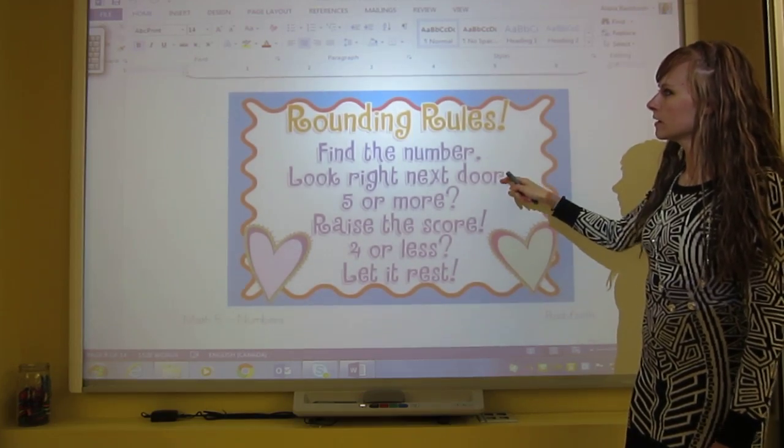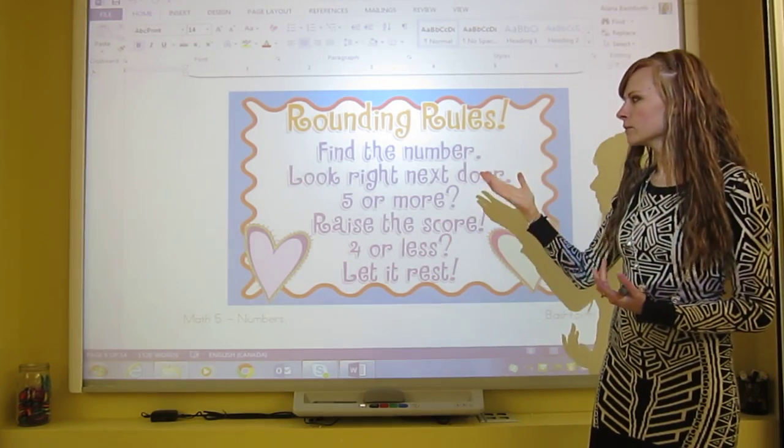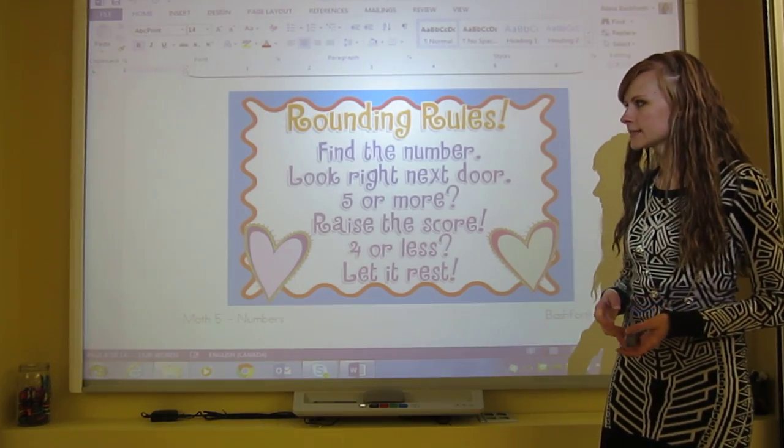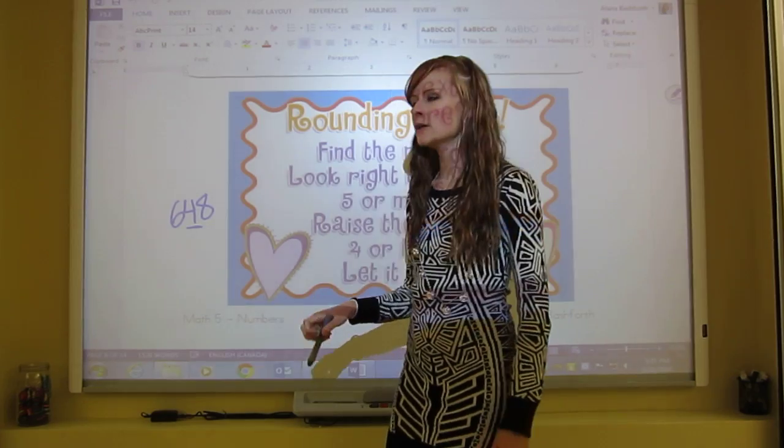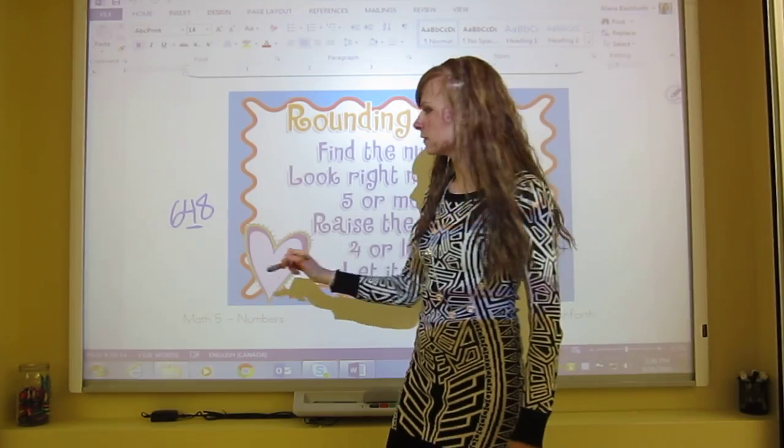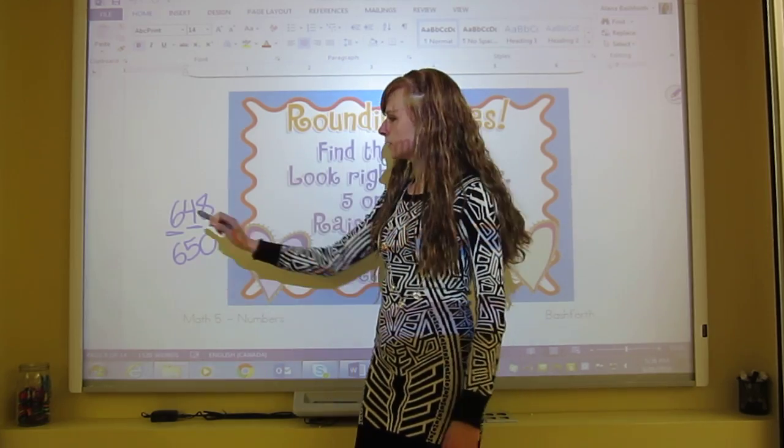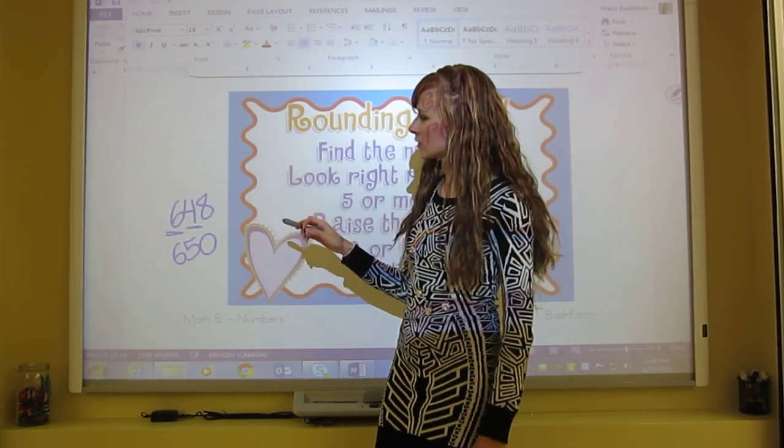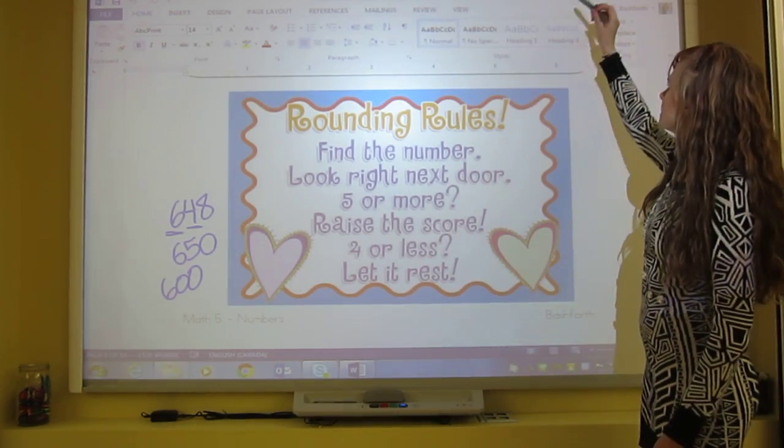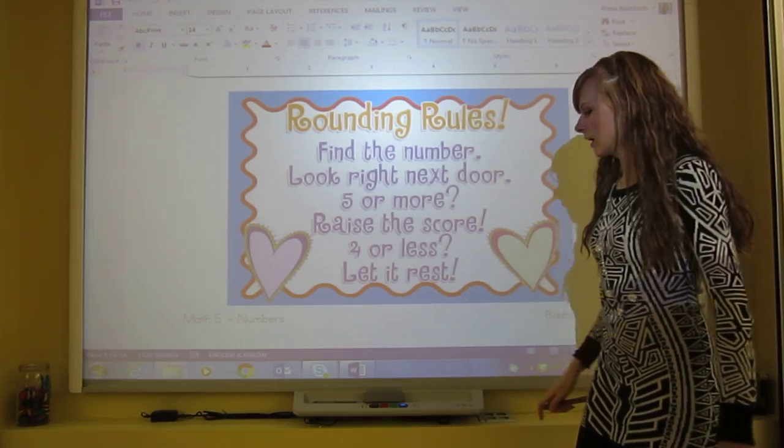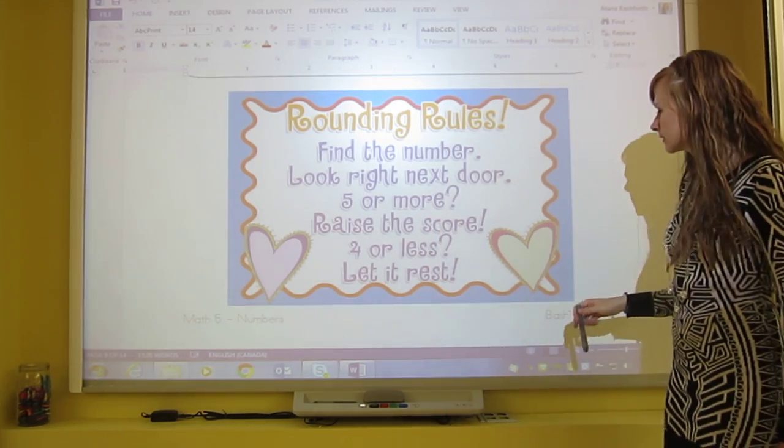So you've seen this before, but this is the rounding rule rhyme that we use when we're remembering how to round. We find the number, look right next door, 5 or more, raise the score, 4 or less, let it rest. So if we have 5,648, and we want to round to the nearest 10, we find the number, look right next door at the 8. If it's 5 or more, we raise the score, so it would end up being 650. If we were rounding to the nearest 100, then we look at the 4, because that's right next door. 4 is 4 or less, so we let the 6 rest, and it would round to 600. This is rounding, and you're going to be using that when you use compatible numbers, and also when you're using front-end rounding with compensation.